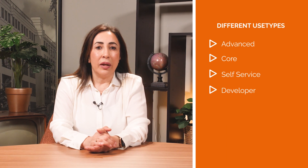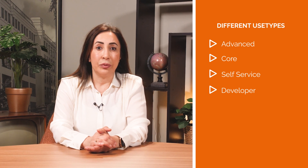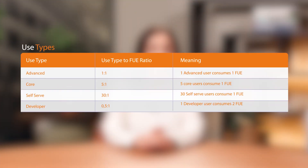The classifications are: advanced use type, core use type, self-service use type, and developer use type. Based on this use type, the number of FUE per person is calculated using a use type to FUE ratio. This ratio ranges from 0.5 to 1, so 1 developer is 2 FUE, and 30 to 1 for the self-service use type.